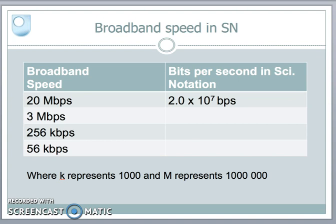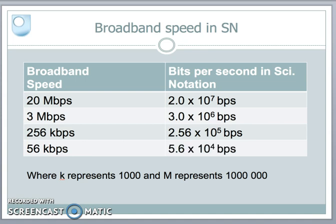We saw how to do the conversion to scientific notation in a previous tutorial. For 3 megabits per second: 3 times 10 to the power of 6, and I always include the decimal place, so 3.0 times 10 to the power of 6. For 256 kilobits — a kilo, remember, is 10 to the power of 3 — this gives 2.56 times 10 to the power of 5. And the slowest speed, 56 kilobits per second, comes to 5.6 times 10 to the power of 4 bits per second.